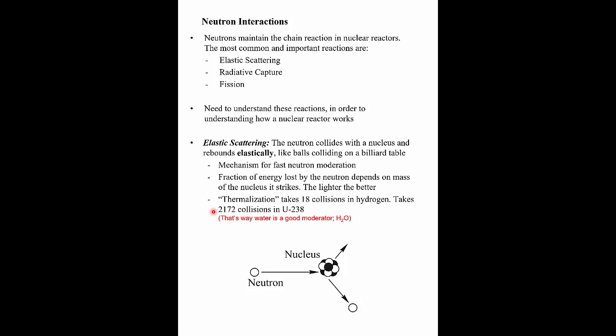That's why water is a good moderator—H2O light water and D2O heavy water—because hydrogen, even heavy hydrogen deuterium, has an atomic mass of only 2, and hydrogen has atomic mass 1, so it's light relative to a neutron and very good at thermalizing those high-speed neutrons. Not all reactors use water: Canada uses heavy water, some reactors use carbon. Mostly water—heavy water and light water—are used as the moderator. So elastic scattering is one thing that can happen to a neutron.